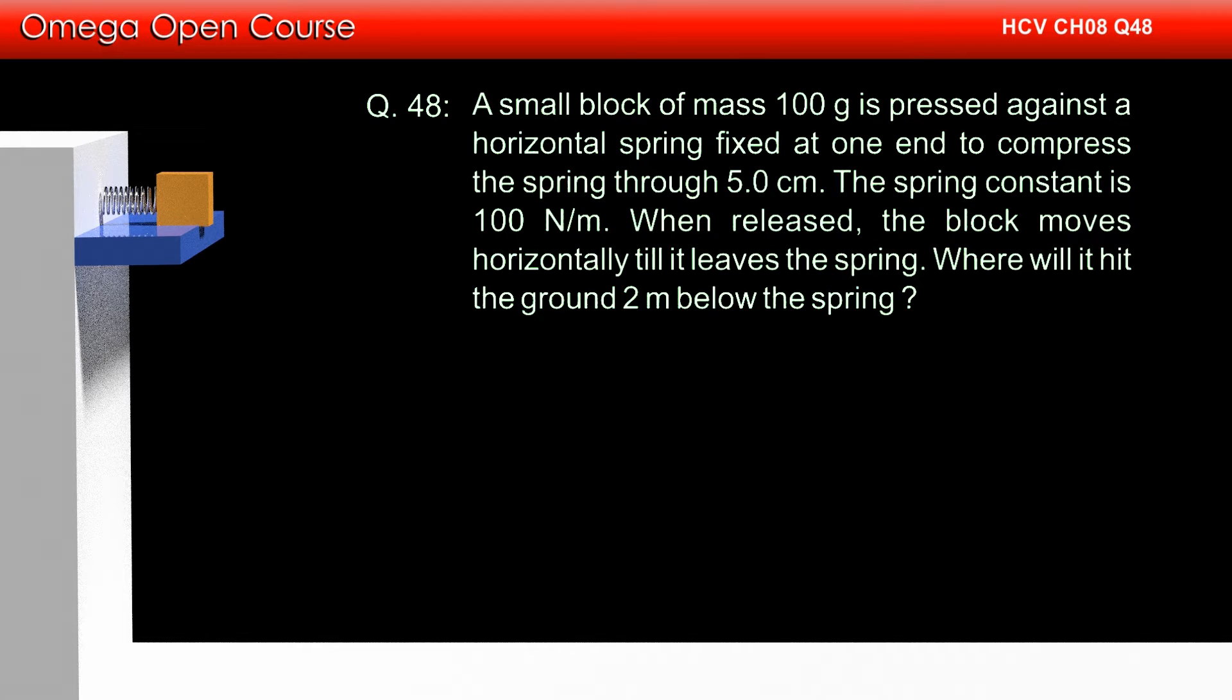A small block of mass 100 gram is pressed against a horizontal spring fixed at one end to compress the spring through 5 cm. The spring constant is 100 N per meter. When released, the block moves horizontally till it leaves the spring. Where will it hit the ground 2 meters below the spring?